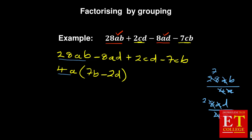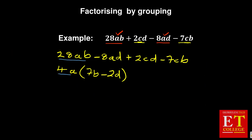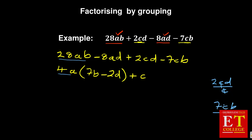In the second group, what is common between 2CD and 7CB? There is nothing common between 2 and 7, but C is the common letter. So you take out a positive C. Dividing 2CD by C gives 2D, and dividing 7CB by C gives 7B. So the second group becomes C(2D minus 7B).